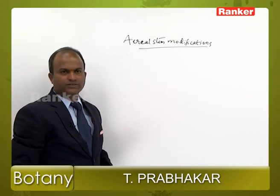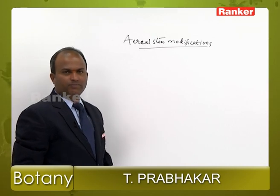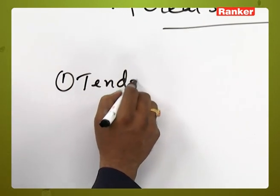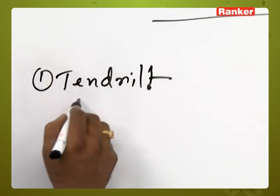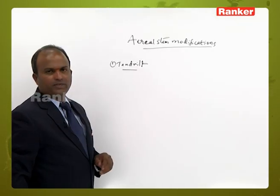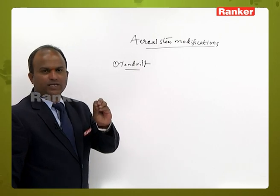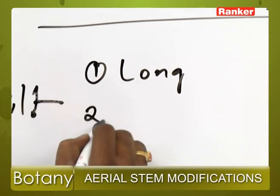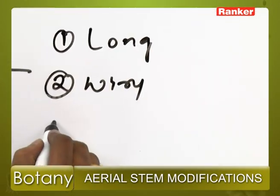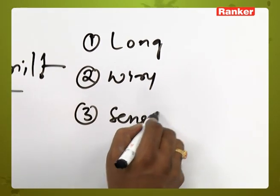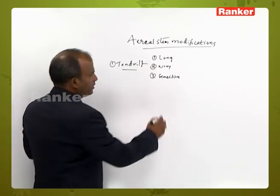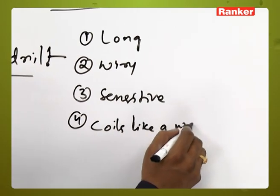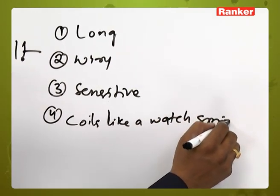Next goes to aerial stem modifications. Under aerial stem modifications, the first one is a tendril. A tendril is a long, wiry, coiled, sensitive structure. It is long, wiry, sensitive, and it coils like a watch spring.